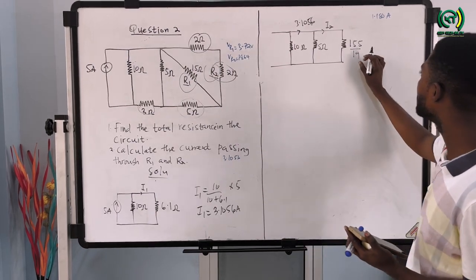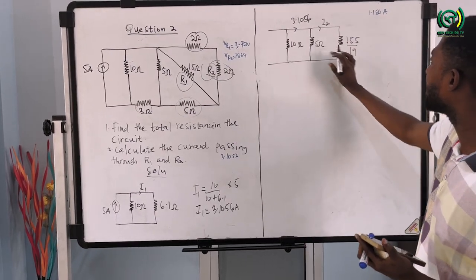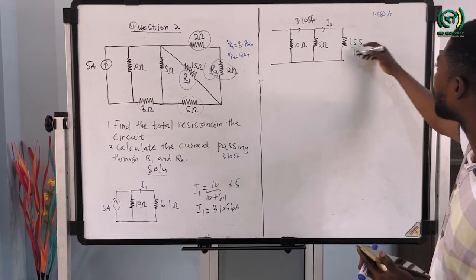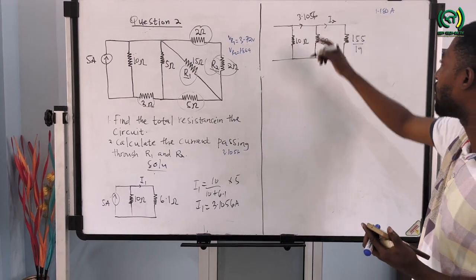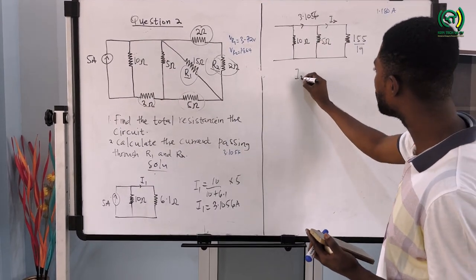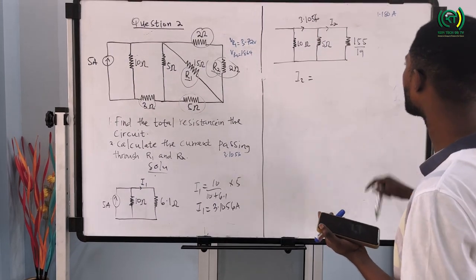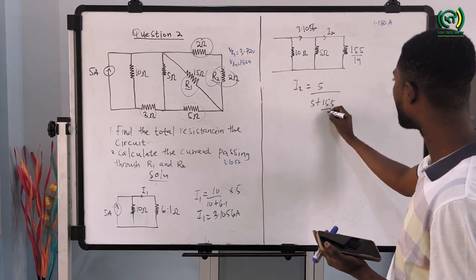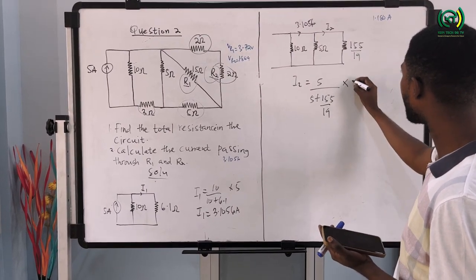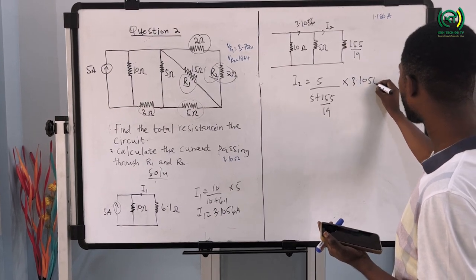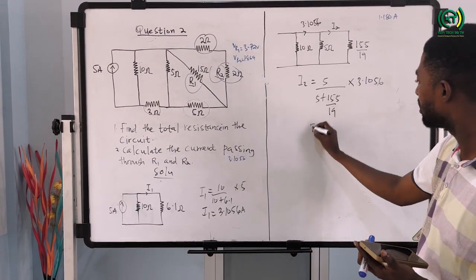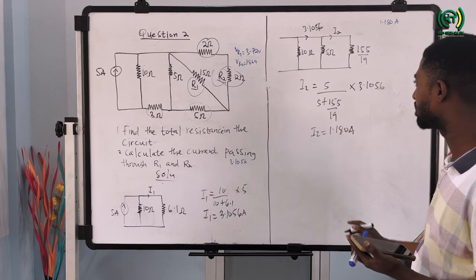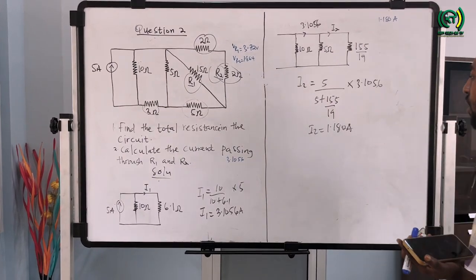If we want to find the current flowing through the 155/19 resistor, we use the current divider rule to calculate I2. I2 equals 5 over (5 plus 155/19) multiplied by 3.1056. So I2 equals 1.180 amps. That is our current I2.